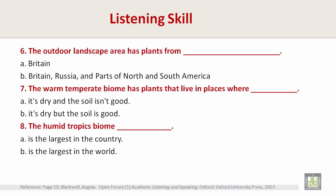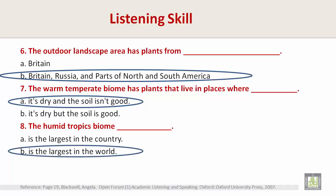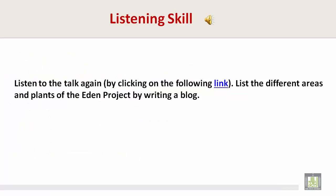Number six: The outdoor landscape area has plants from — B. Britain, Russia, and parts of North and South America. Number seven: The warm temperate biome has plants that live in places where — A. it's dry and the soil isn't good. Number eight: The humid tropics biome — B. is the largest in the world. Listen to the talk again by clicking on the following link. List the different areas and plants of the Eden Project by writing a blog.